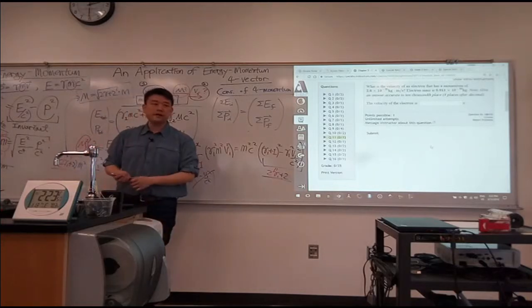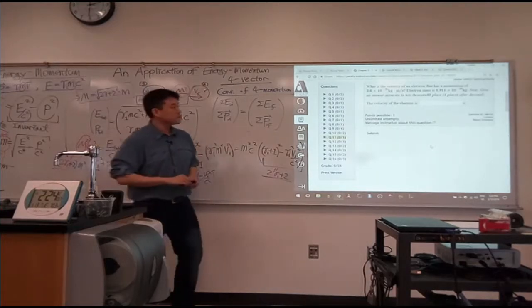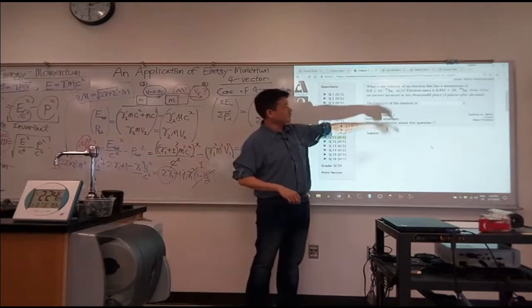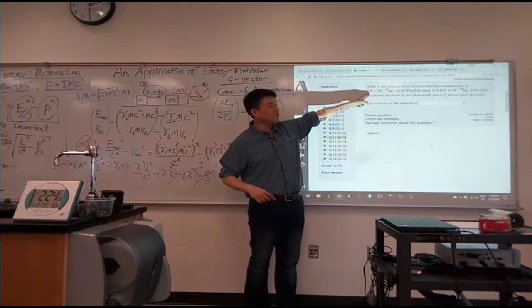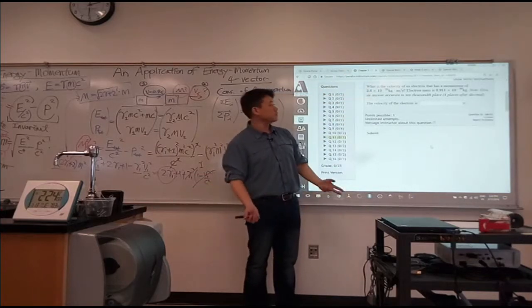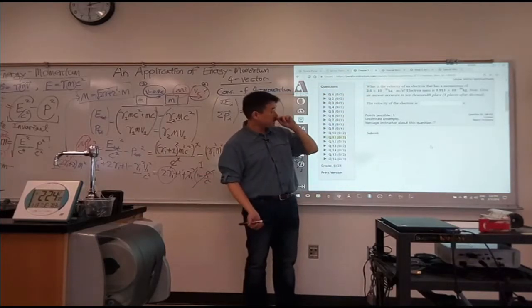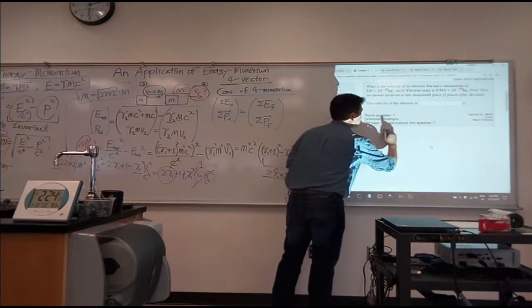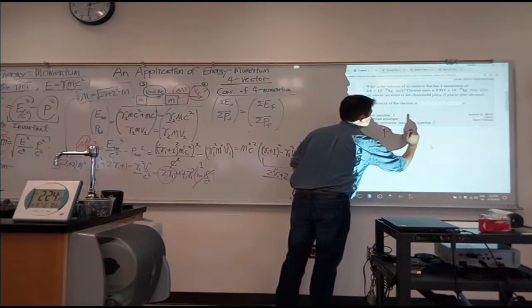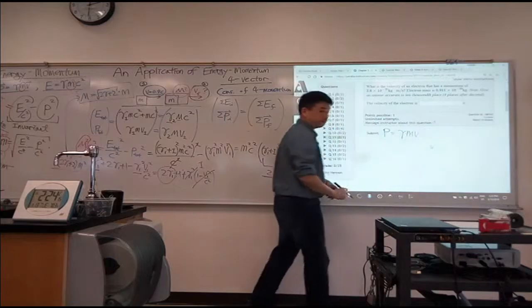Let me give you a quick hint, kind of an algebra hint. It says, what is the velocity of an electron that has some relativistic momentum? So you say, all right, the momentum of the electron is gamma mv, right?